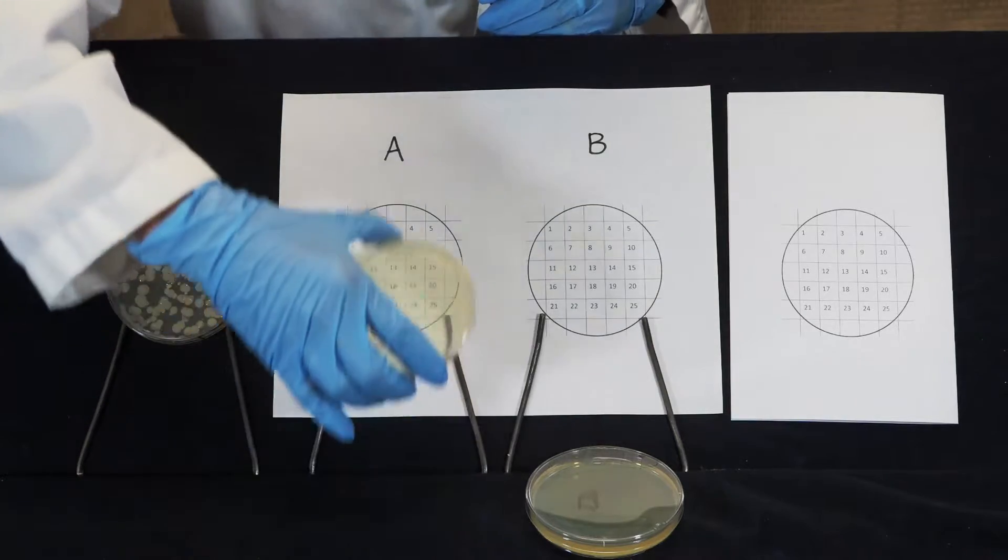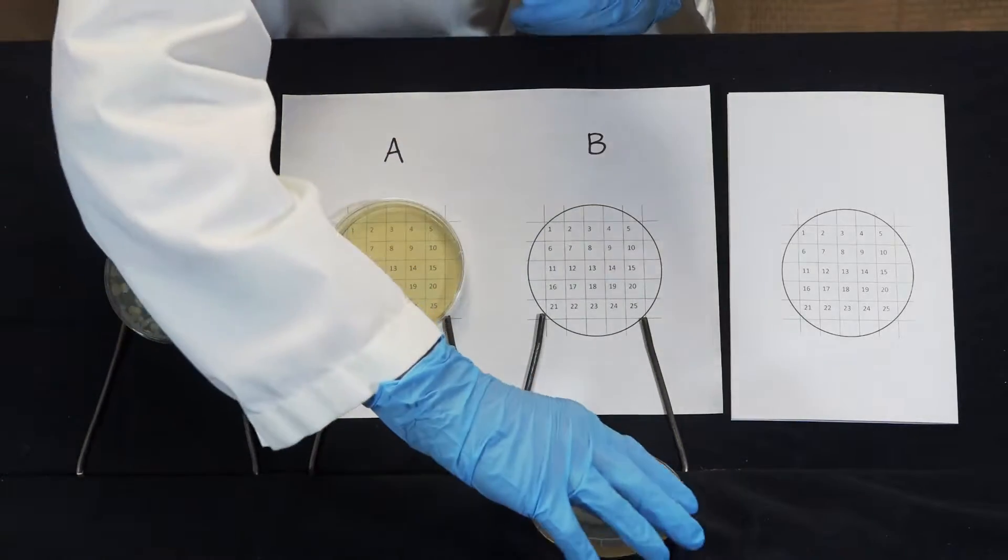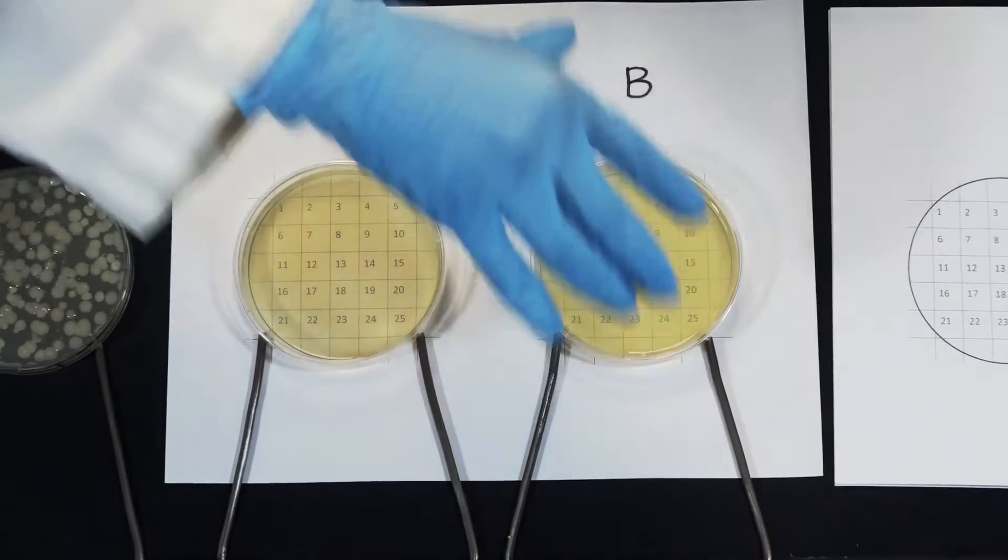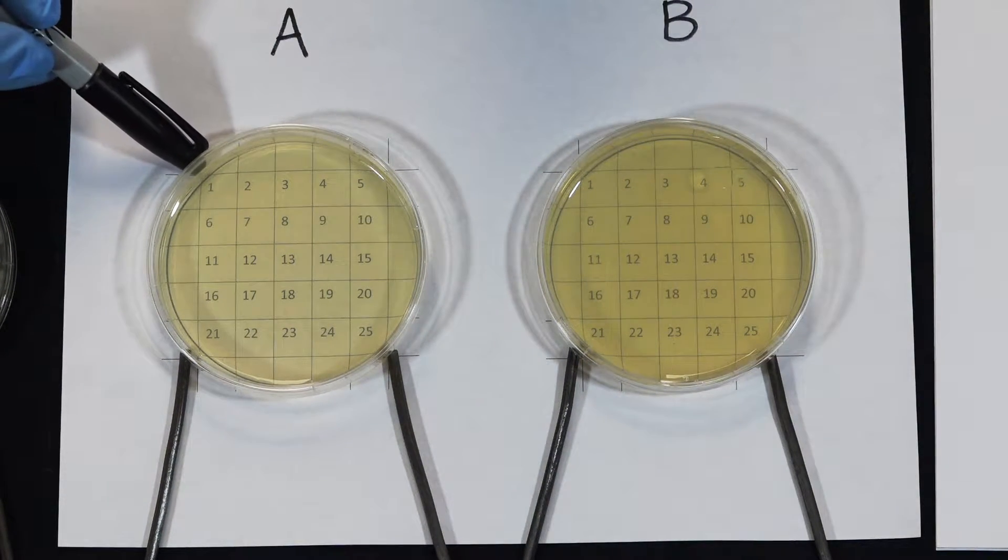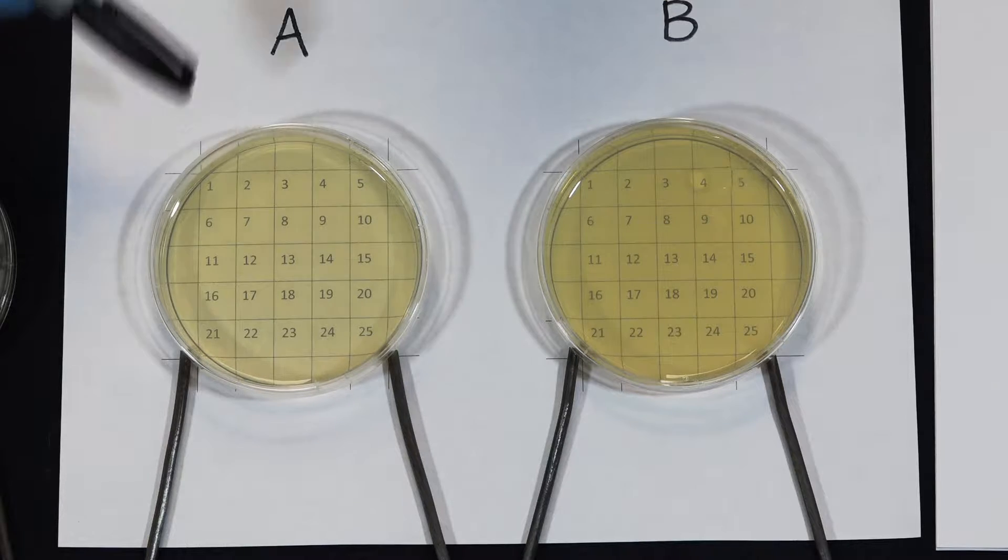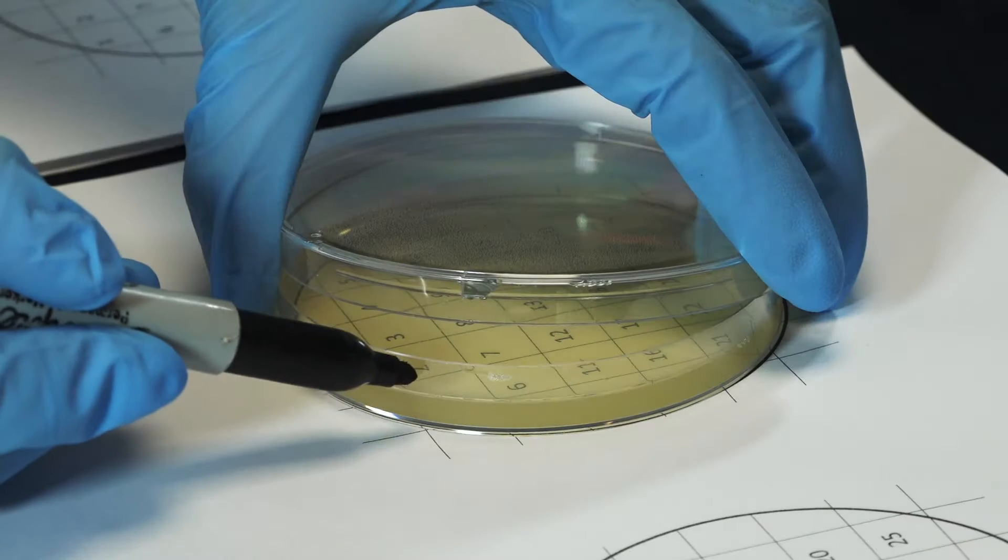We'll start by aligning our Petri plates over the grid. Then we're going to mark a reference point by square one on both the grid and the plate for both plates.